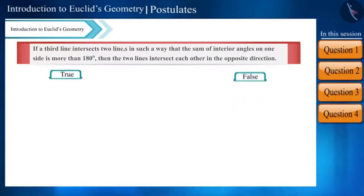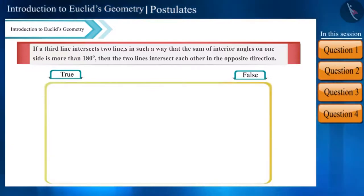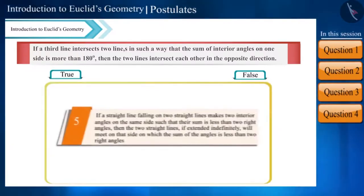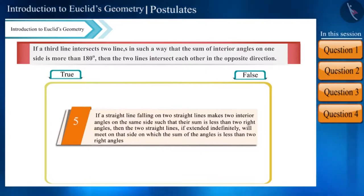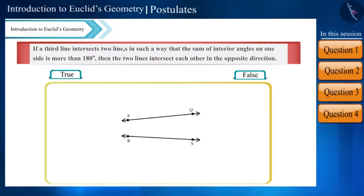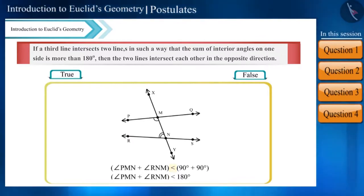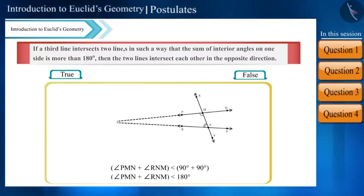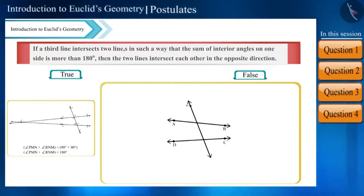Friends, this statement is Euclid's fifth postulate given in a different form. If the sum of interior angles on any one side is less than 180 degrees, that is less than the sum of two right angles, then these lines will intersect on the same side. Similarly, if the angle sum is more than 180 degrees, the sum of interior angles on the other side will be less than 180 degrees and the lines will intersect each other on that side.